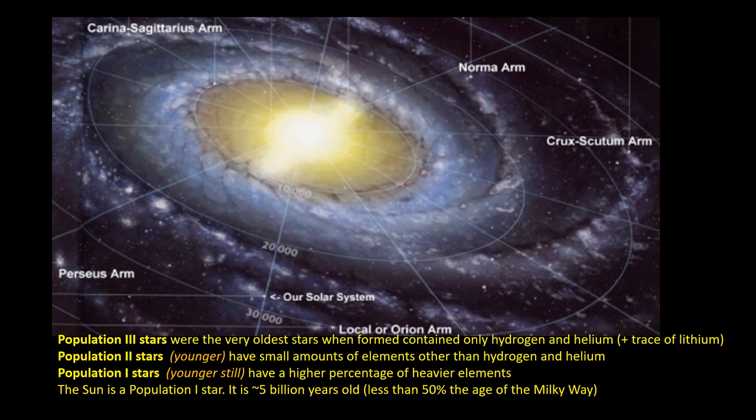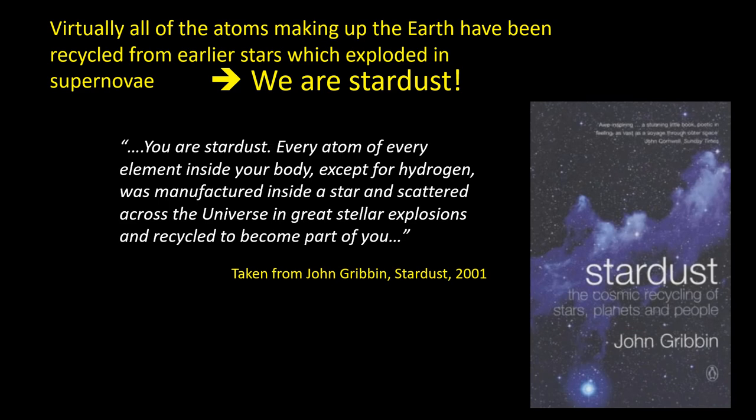Much of the material in the Population I stars and the planets has been recycled. It will have been created in earlier Population II and Population III stars which exploded as supernovae, scattering the debris throughout the universe. Some of this debris later clumped together to form stars and planets such as Earth. This phrase was taken from a book by the British popular science writer John Gribbin: We are literally stardust.